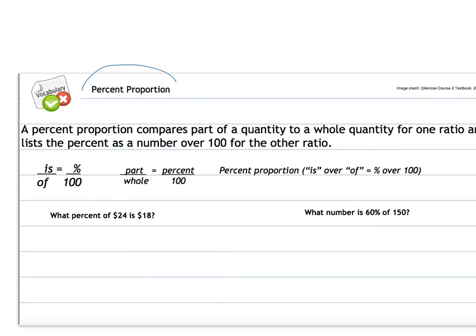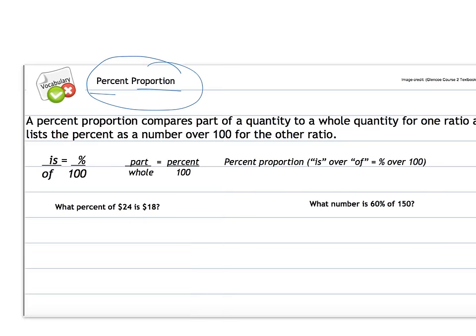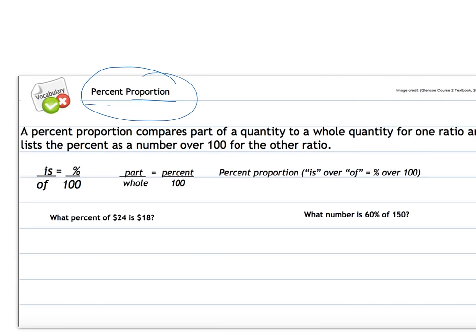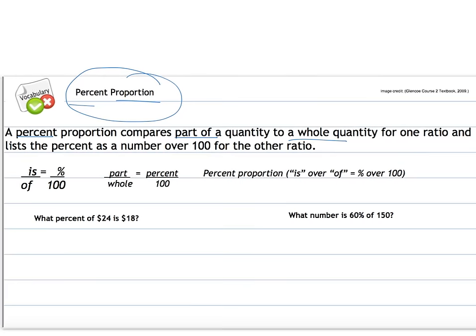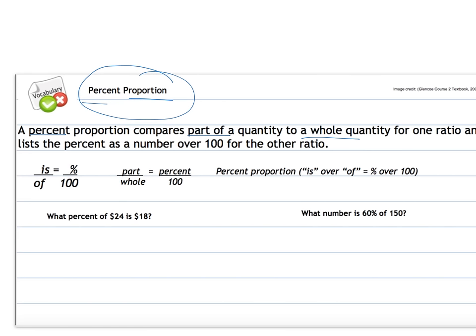So first we're going to learn about the percent proportion. We've learned about proportions before and we've learned about percents before. So we're going to combine those two things. A percent proportion compares a part of a quantity to a whole. So again, percent, we're comparing a part to a whole for one ratio and list the percent as a number over 100. We've talked about if I get a 70%, a 70 out of 100 on a test, that's the same as if I got 7 out of 10 on a test, or 14 out of 20 on a test. So your percent is equal to a part out of a whole.